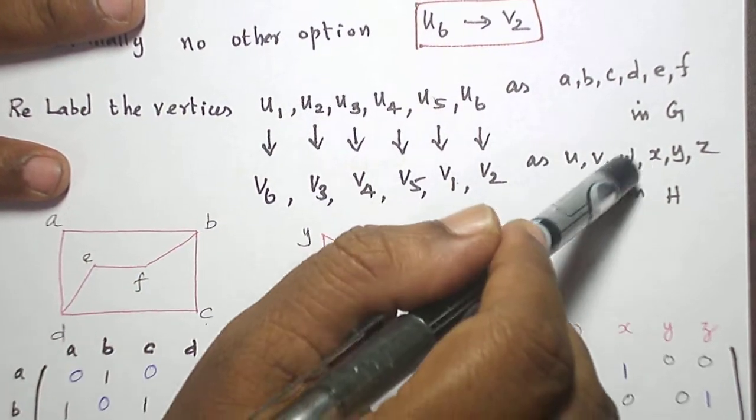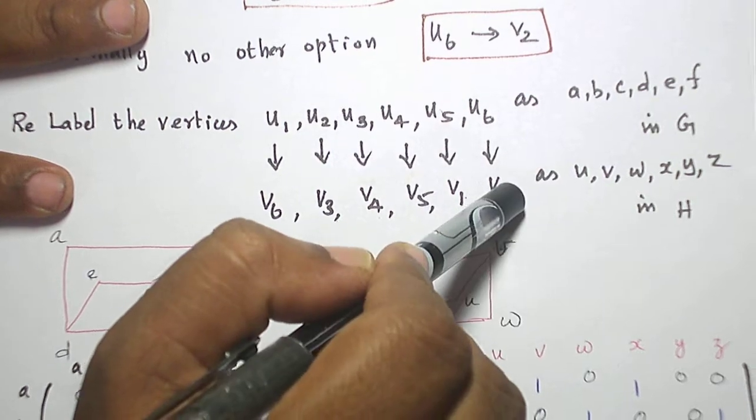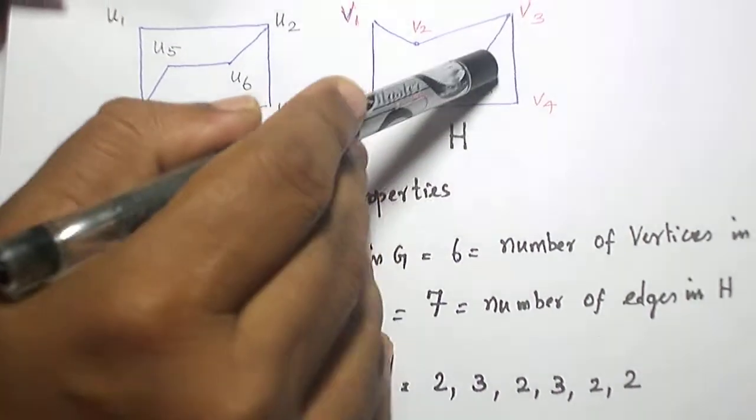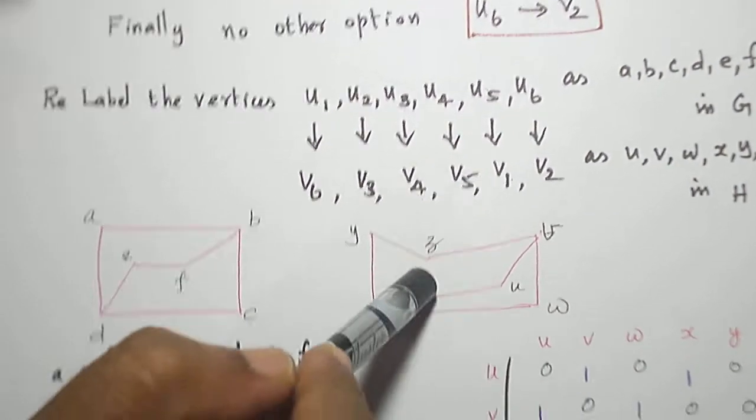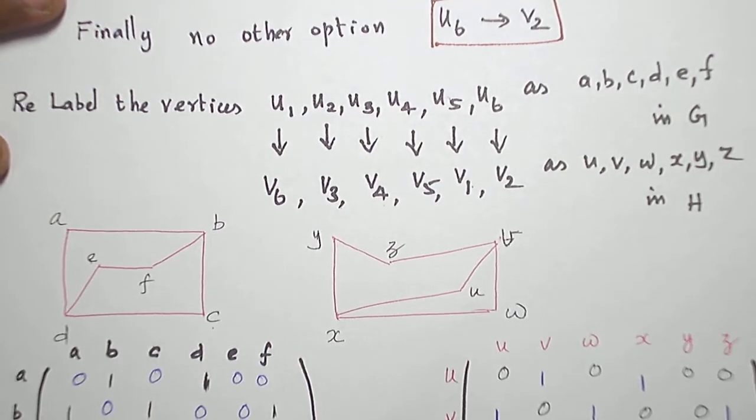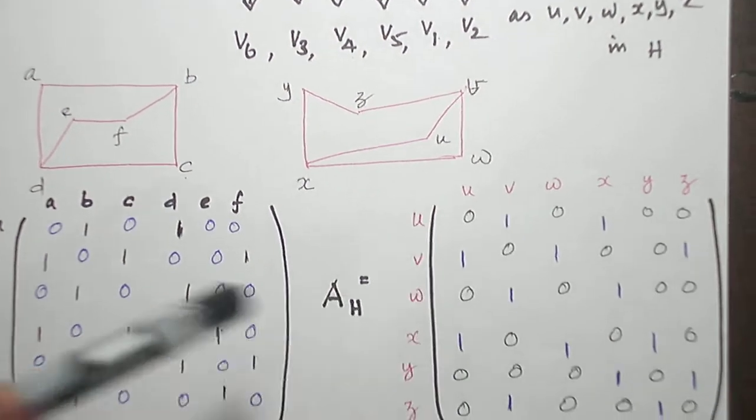So these vertices are relabeled in this way: a, b, c, d, e, f and u, v, w, x, y, z. And I write the adjacency matrices of these two graphs.